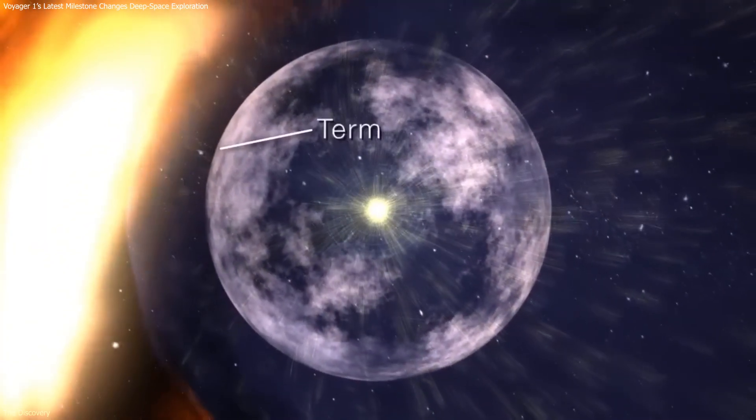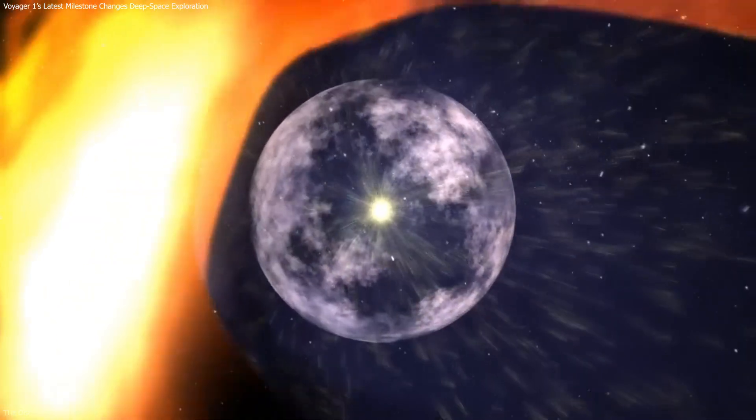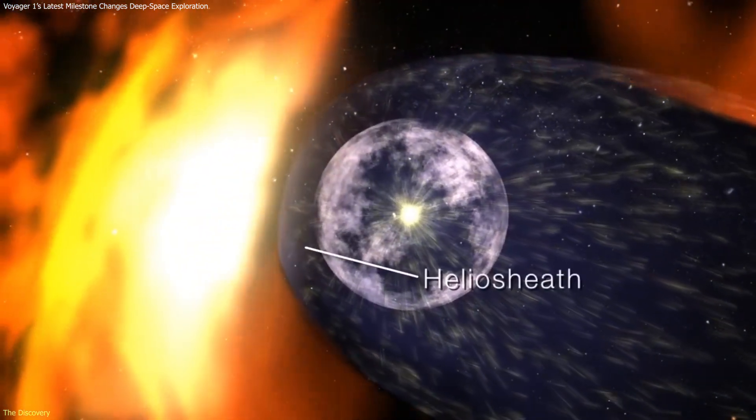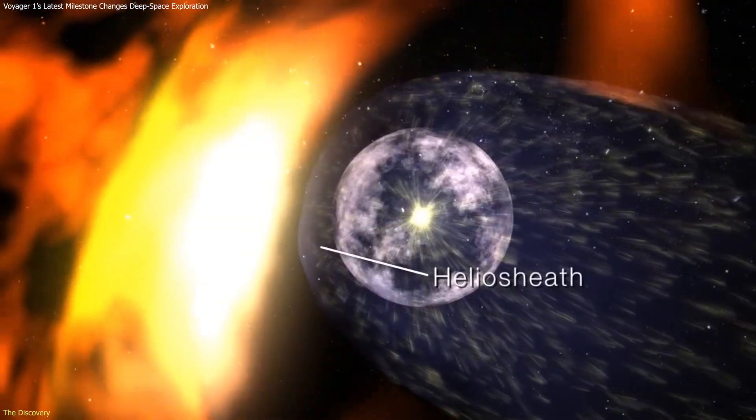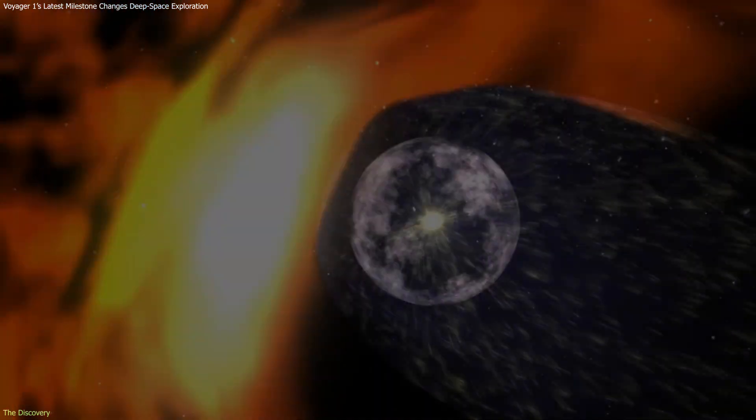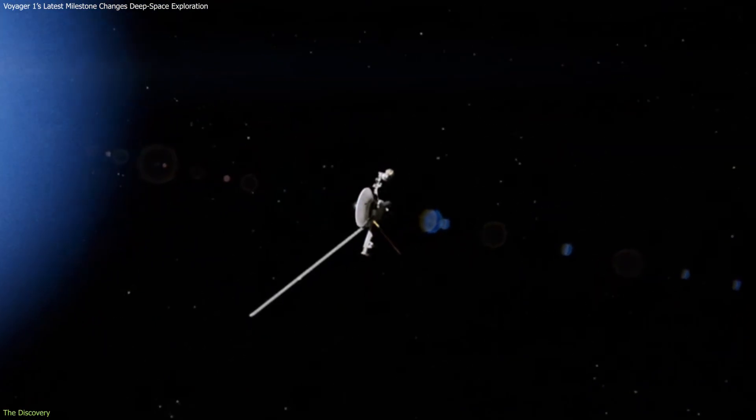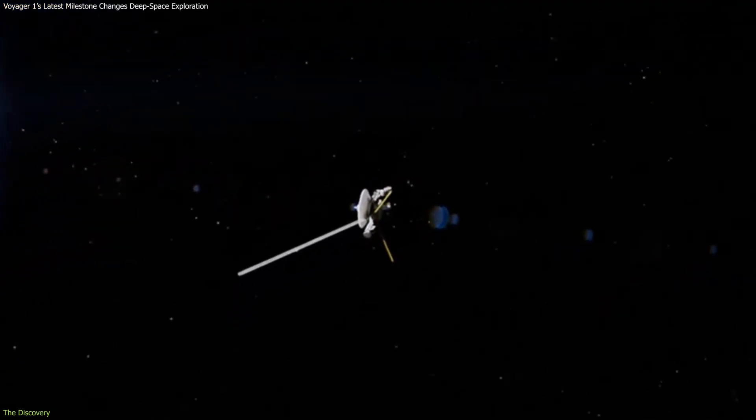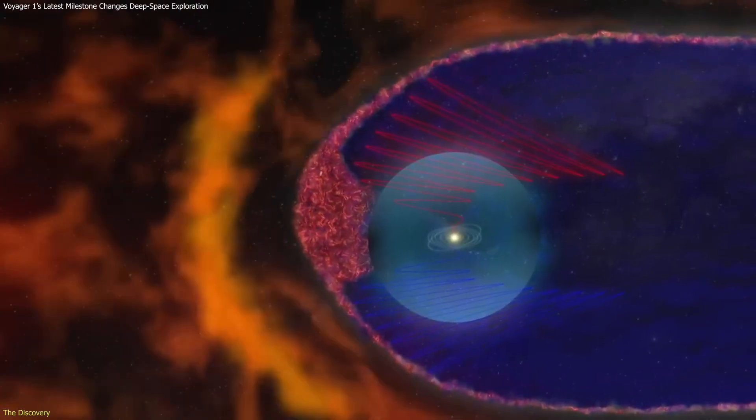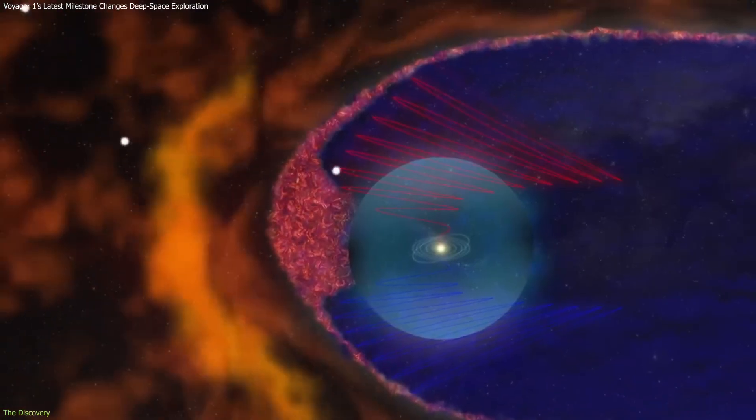The milestone also highlights Voyager's position beyond the Sun's influence. Since 2012, the spacecraft has been outside the heliopause, the boundary that separates the solar wind from the interstellar medium.